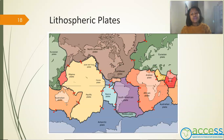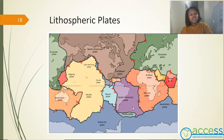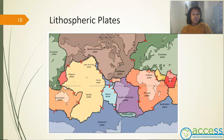Our lithosphere is broken up into different lithospheric plates. There are seven major plates, and these are located according to the continents — for example, you have the African plate containing Africa, and the Eurasian plate containing Eurasia. We also have minor plates, but here we will mainly focus on the major plates.